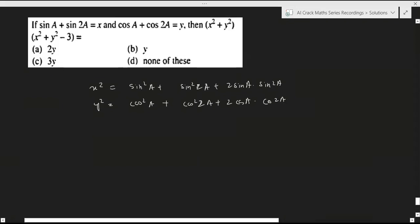This also looks favorable. If I add both of these, 2 sin a sin 2a and 2 cos a cos 2a, I can see some kind of cos of a minus b formula.